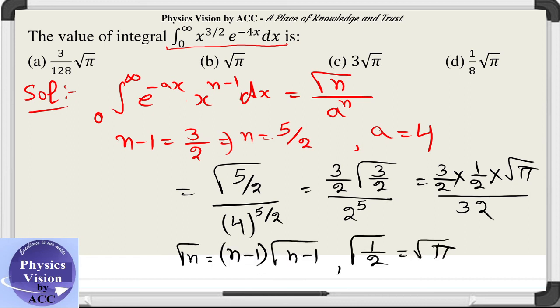Now when you will calculate this factor you will get 3 under root pi by 128 as your correct answer, because 32 into 4 is 128.